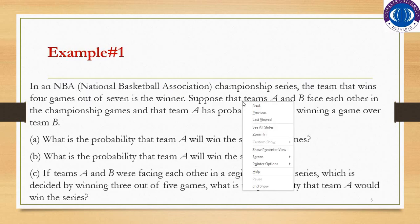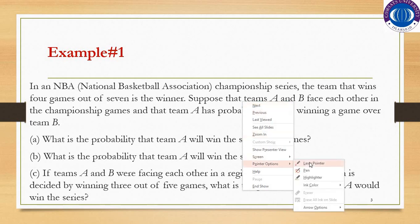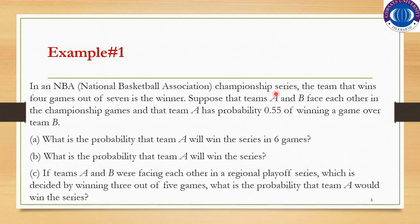In an NBA National Basketball Association Championship Series, a team that wins 4 games out of 7 is the winner. Suppose that Team A and B face each other in the Championship Games and that Team A has a probability of 0.55 of winning a game over Team B. What is the probability that Team A will win the series in 6 games?